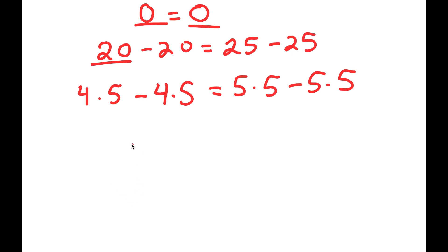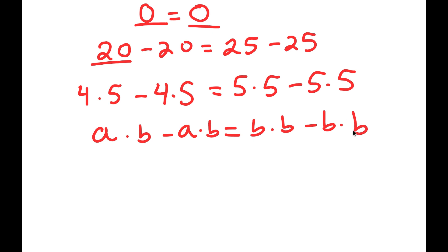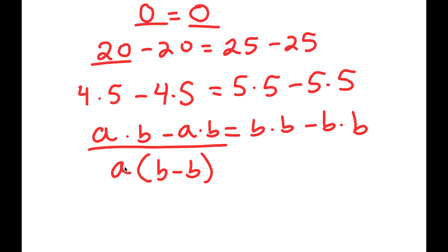Now, if I have something in the form a times b minus a times b is equal to b times b minus b times b, notice how we can simplify this by factoring out the greatest common factor. From the left-hand side, we have a greatest common factor of either a or b because both are in both terms. So I'm going to rewrite this as a times (b minus b) — I factored out a. From the right-hand side, the only common factor is b, so I factor out b and get b times (b minus b).